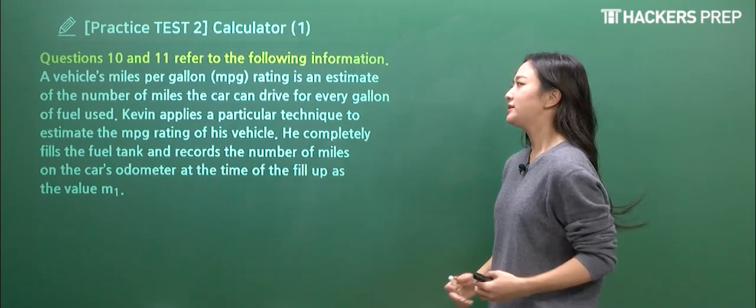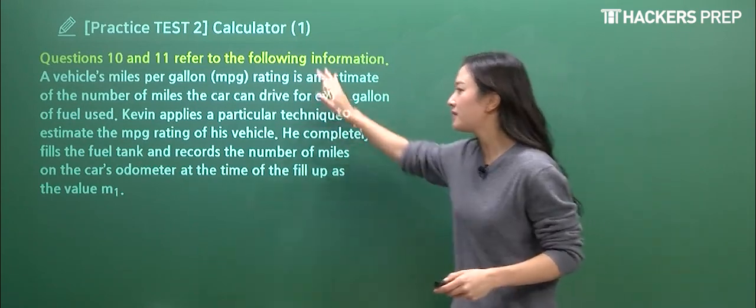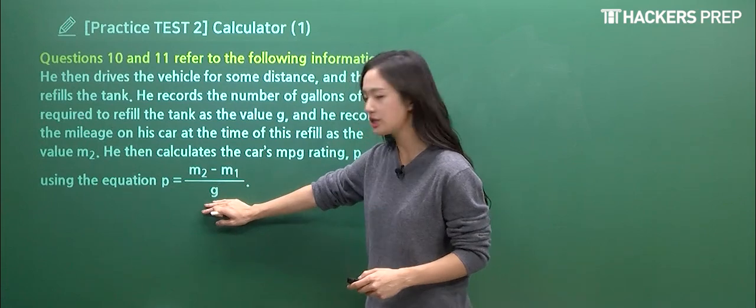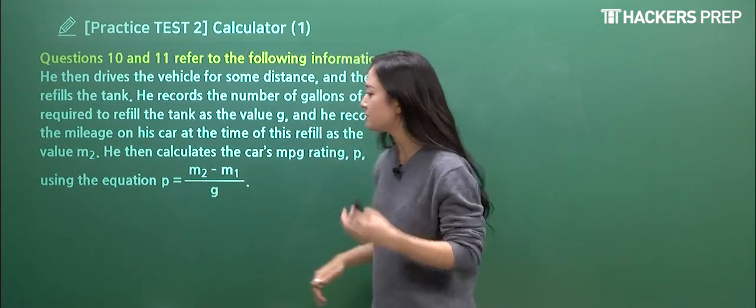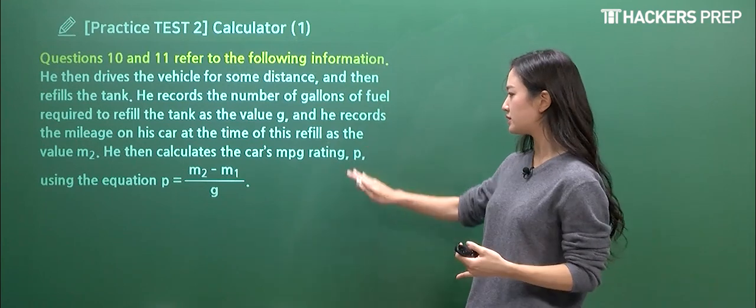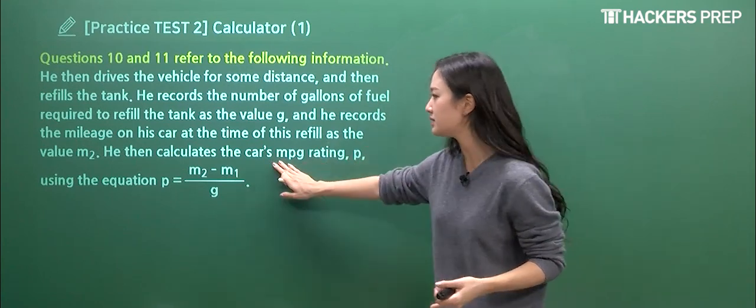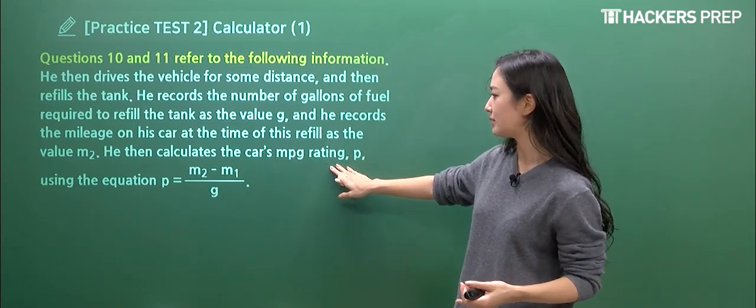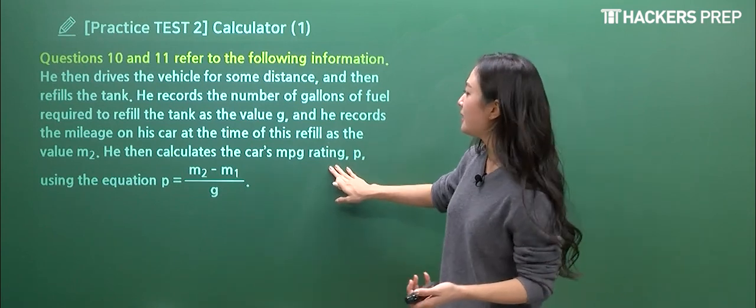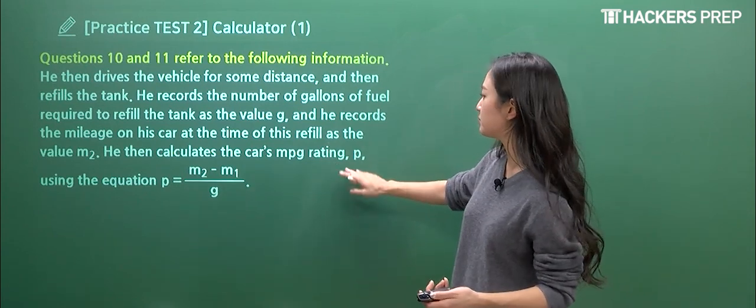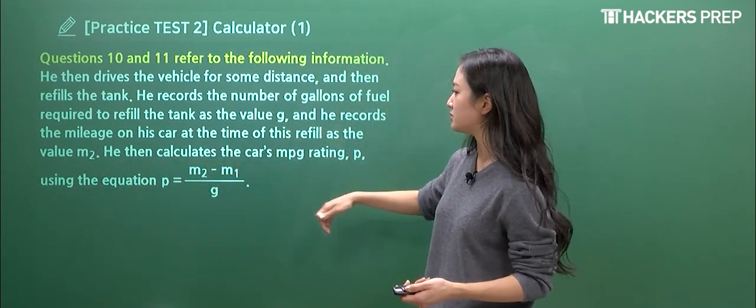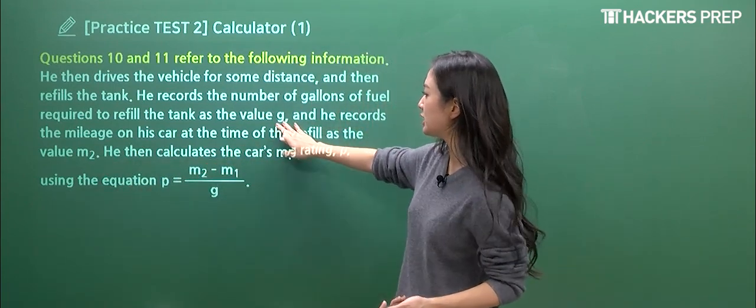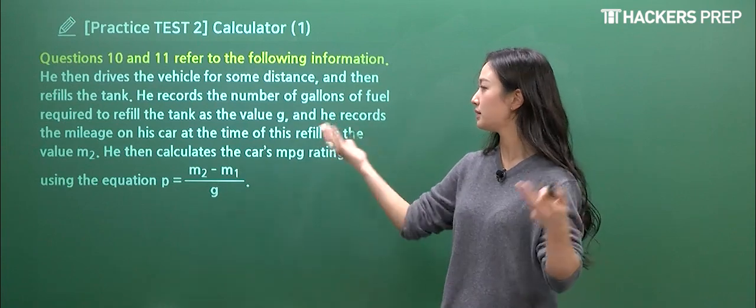So we have two questions referring to the common information. I mean everything here is going to be expressed in the equation. So all you have to do is if you wanted to solve this a little bit quickly you just match up the variables. First of all, what does P refer to? It's going to be the car's MPG rating. And then M1, M2 are both going to refer to mileage, and the final variable of G is going to be the gallons of fuel to refill this.